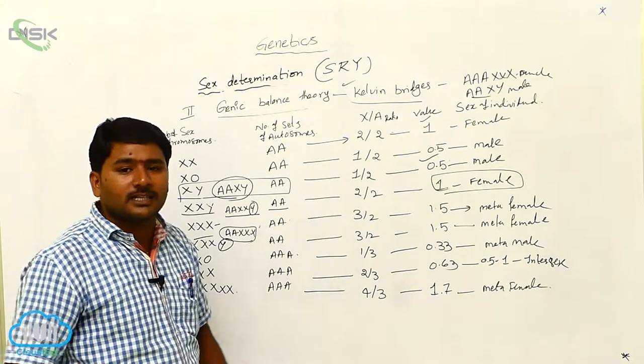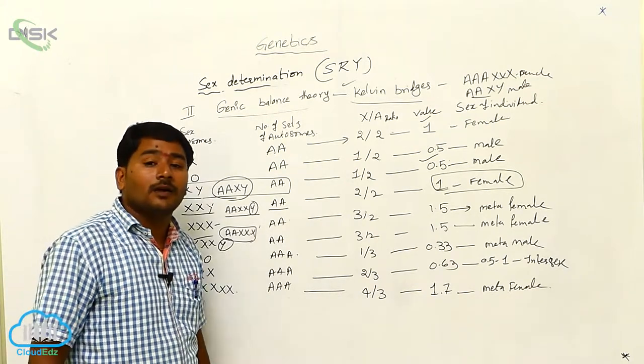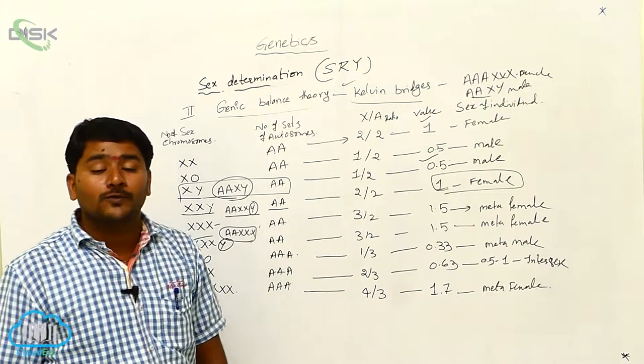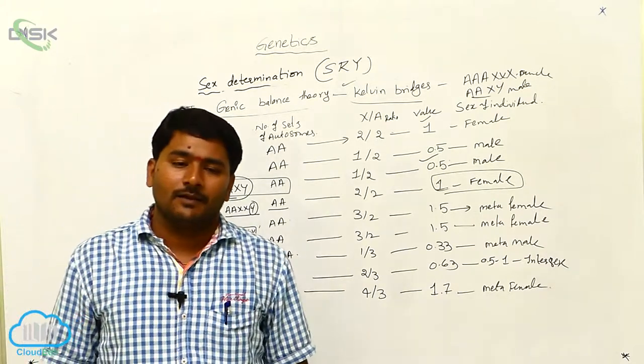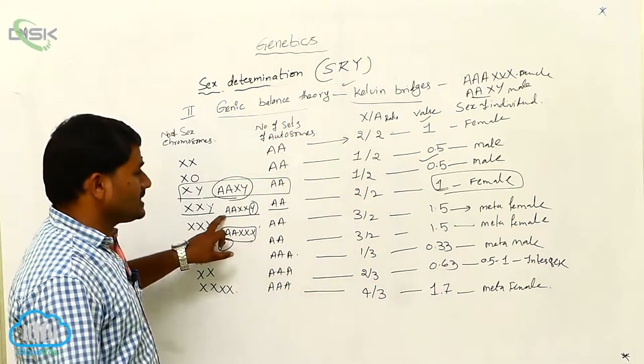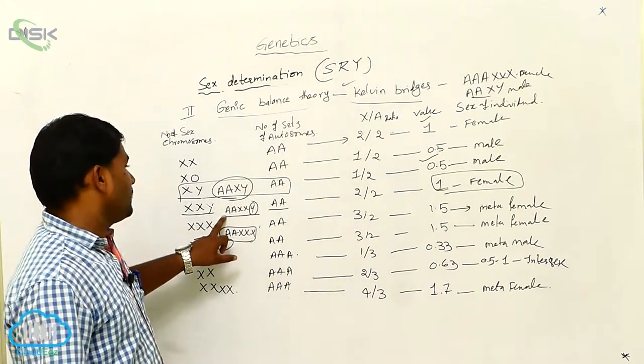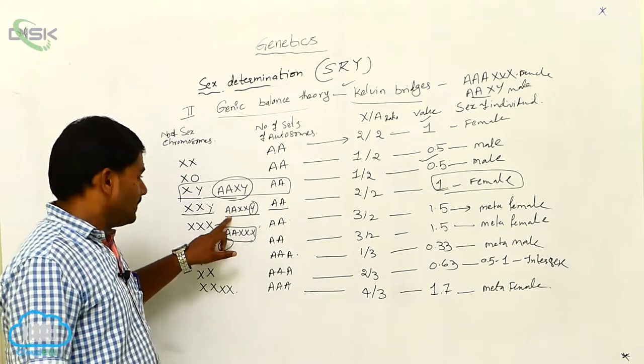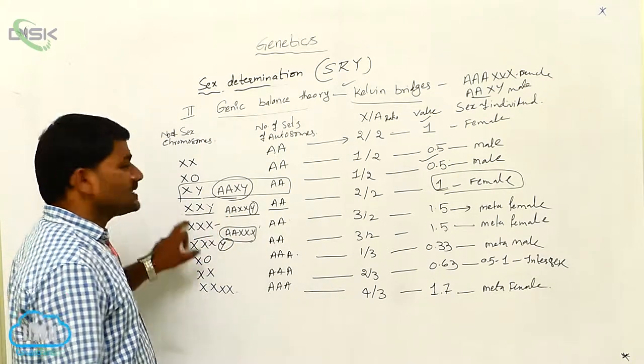Hence Y is not determining the sex. But Y is useful for the maleness. Y is useful for the maleness. But here, this is female. But this female is sterile.